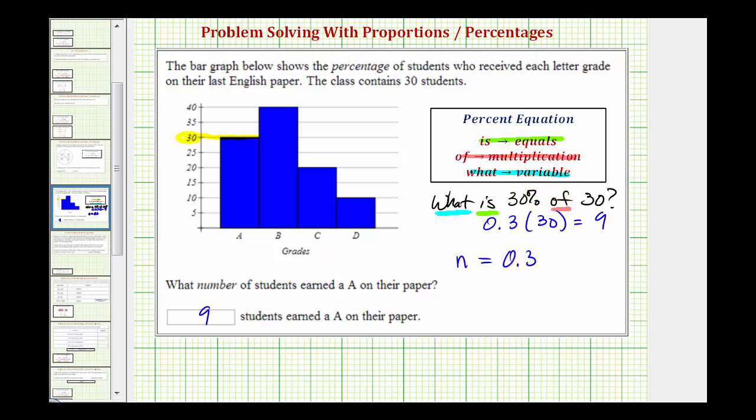The word of means multiply, so we have 0.3 times, and then we have the number 30.